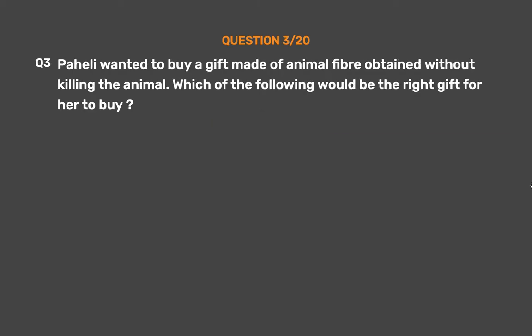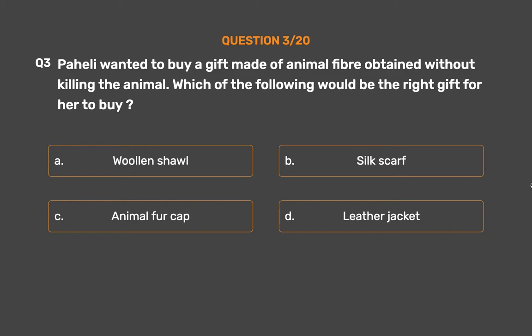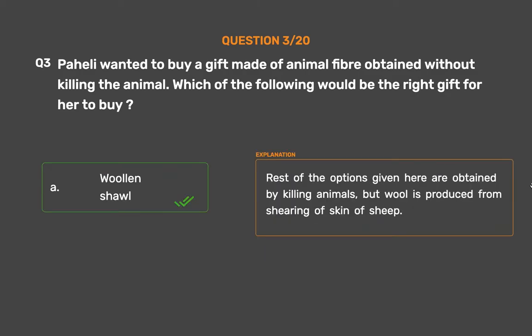Question No. 3. Paheli wanted to buy a gift made of animal fiber obtained without killing the animal. Which of the following would be the right gift for her to buy? Option A: Woollen shawl, Option B: Silk scarf, Option C: Animal fur cap, Option D: Leather jacket. The correct answer is Option A: Woollen shawl. The rest of the options are obtained by killing animals, but wool is produced from shearing the skin of sheep.